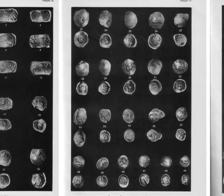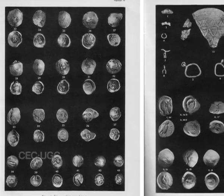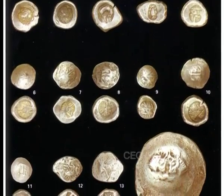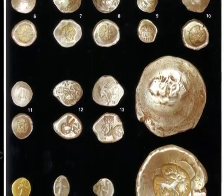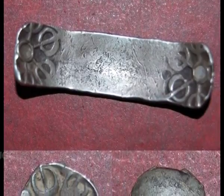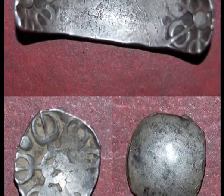Another interesting find is the Chaman-i-Hazuri hoard from the Kabul region in Afghanistan, where coins of Greek city-states from around the 6th or 5th century BC were found. Along with these, we have Bent-bar coins and another kind known as saucer-shaped coins. The Chaman-i-Hazuri hoard also reflects that by the beginning of the 4th century BC, silver punch-mark coins were prevalent in the Indian subcontinent.